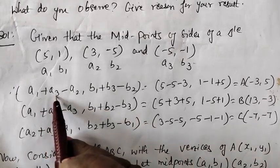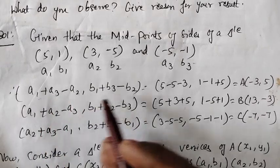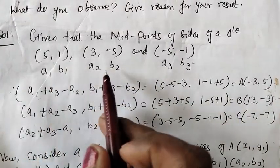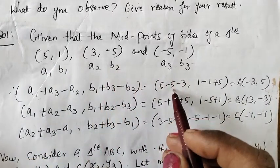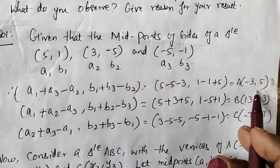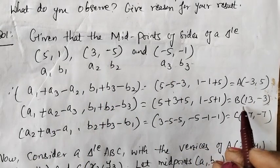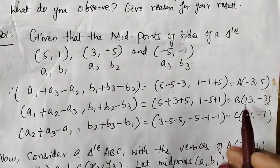In the formula, we use a1 plus a3 minus a2. So, we substitute a1,b1, a2,b2, a3,b3. Substitute to find A of (-3,5). This is B, C. These are the vertices of the triangle.